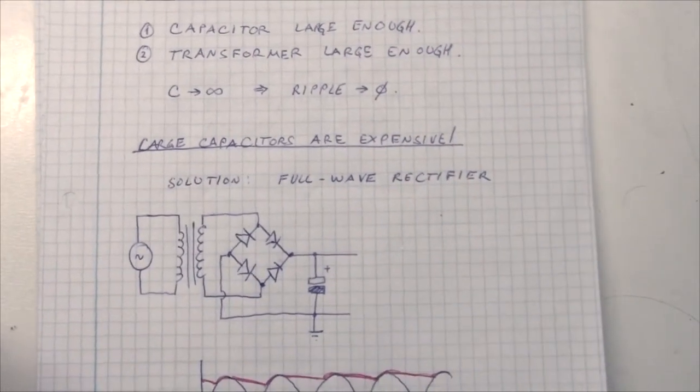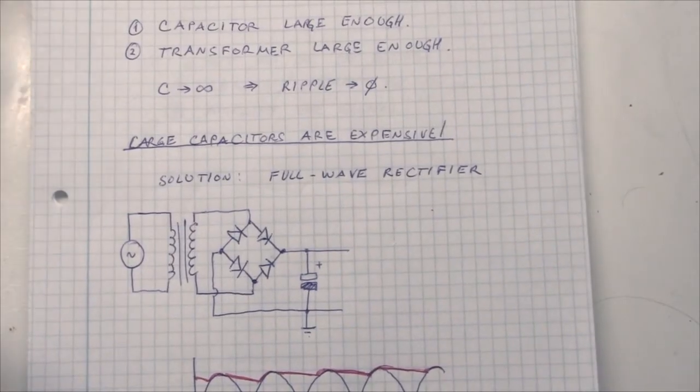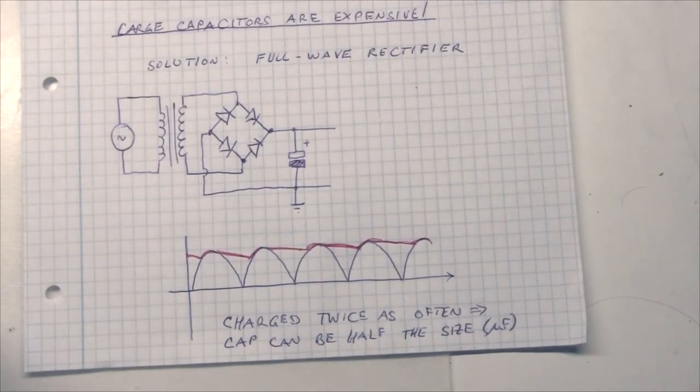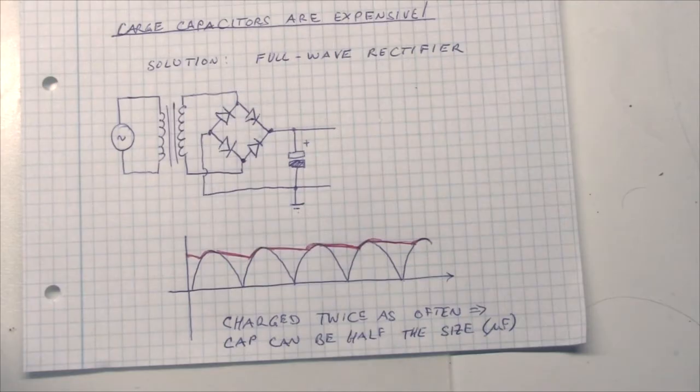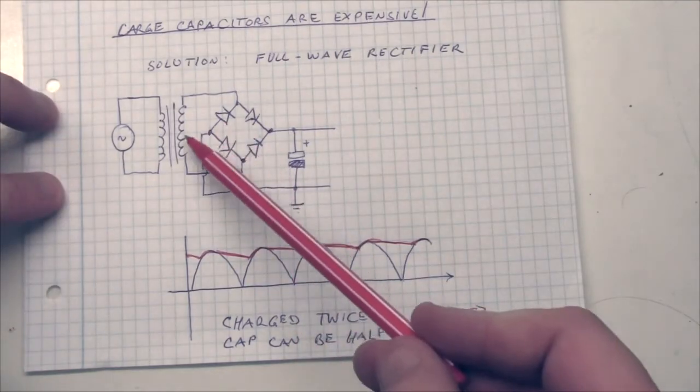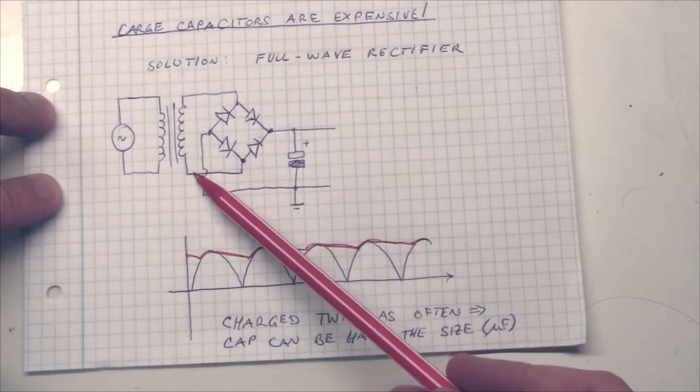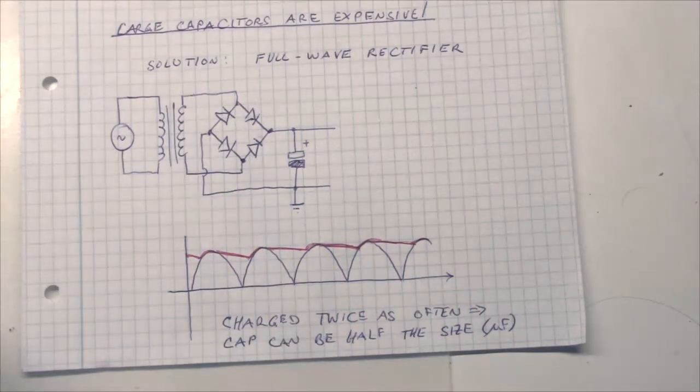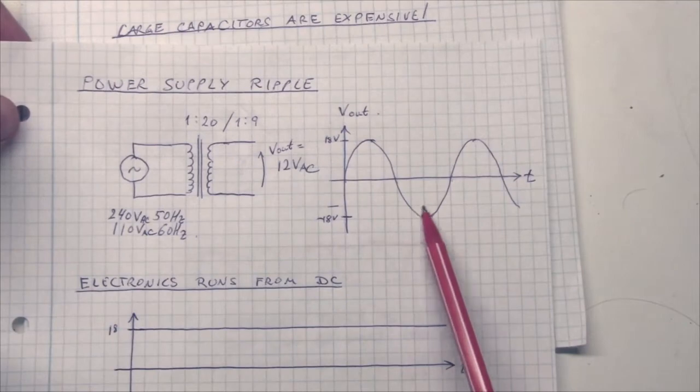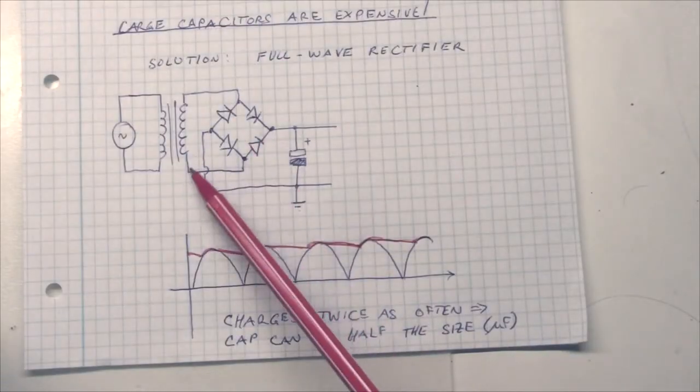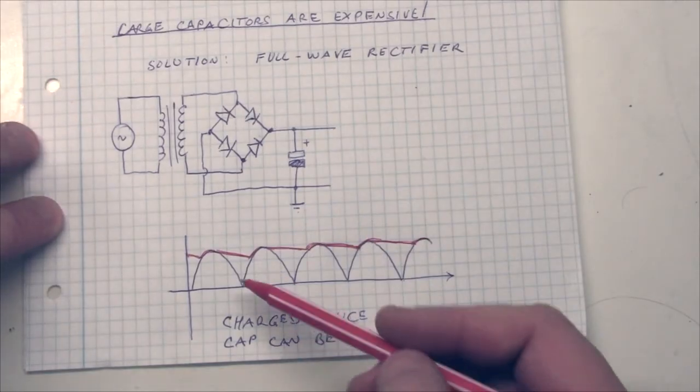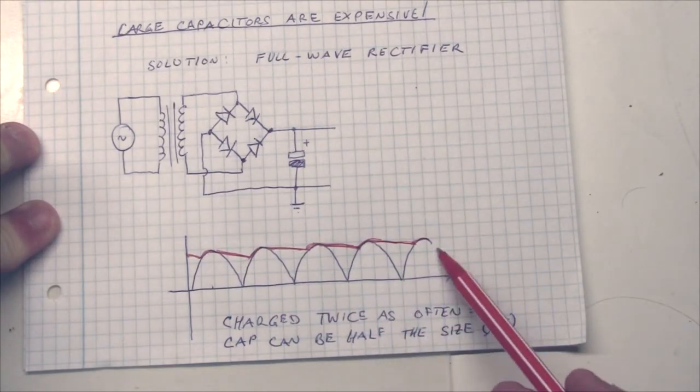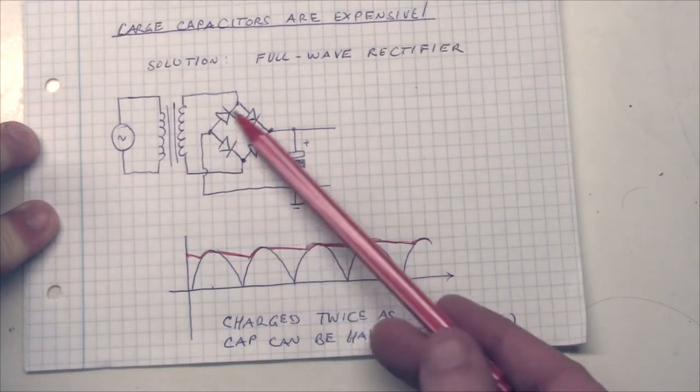Now, large capacitors are expensive. So, someone came up with a clever idea here, and that is called the full wave rectifier. And using that, we use four diodes instead of one, and then we have positive voltage running through there. And when this point here is more positive than that one, that means when we have the negative part of the sine wave, then the other diode will conduct. So, basically, what we have is all the waveforms go through, and that is called the full wave rectifier, or the rectifier bridge. This is called the rectifier bridge.